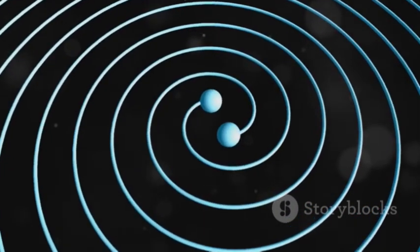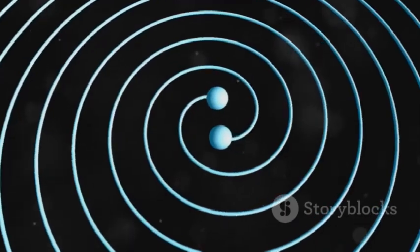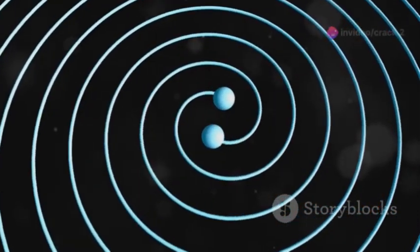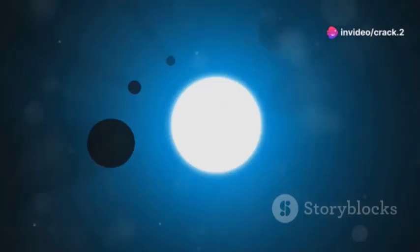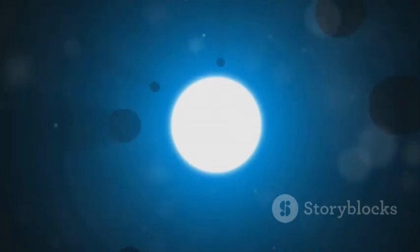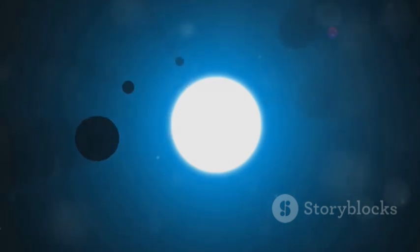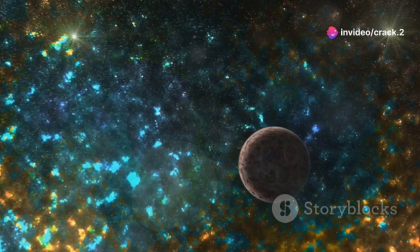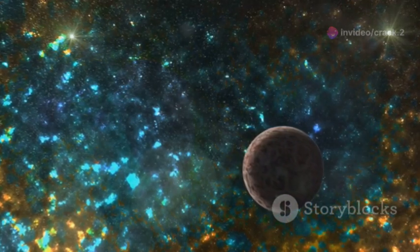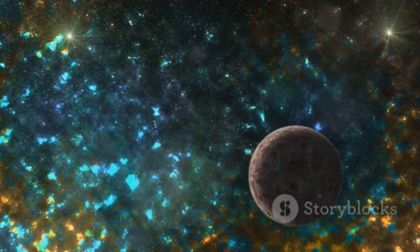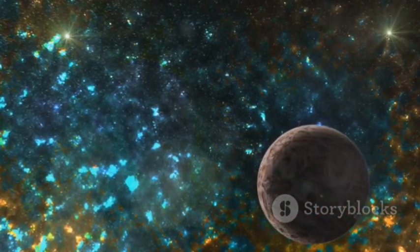In the late 17th century, Sir Isaac Newton revolutionized our understanding of gravity with his law of universal gravitation. Newton proposed that every object in the universe attracts every other object with a force proportional to their masses and inversely proportional to the square of the distance between their centers. This elegant equation explained why objects fall to the Earth, why the moon orbits the Earth, and why planets orbit the sun. Newton's theory of gravity remained the dominant explanation for over two centuries, successfully predicting the motions of celestial bodies with remarkable accuracy.